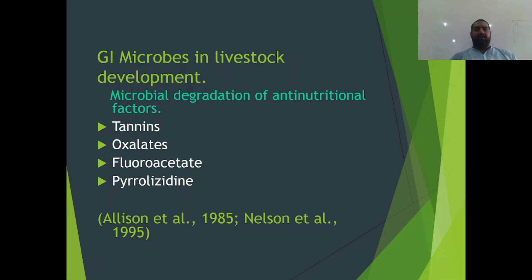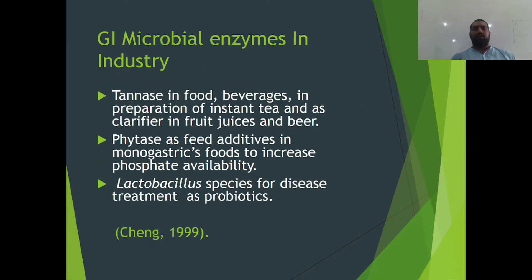The microflora in the gastrointestinal tract also degrades anti-nutritional factors, which in some cases include tannins, oxalates, fluoroacetates, and pyrrolizidine alkaloids. The gastrointestinal microbes produce certain enzymes that are used outside the animal — for example, tannases used in food and beverage preparation, used as a clarifier in fruit juices and beer. There is also phytase, which is used as a feed additive in monogastric animals to increase phosphorus availability. Lactobacillus species are used for disease treatment as probiotics.